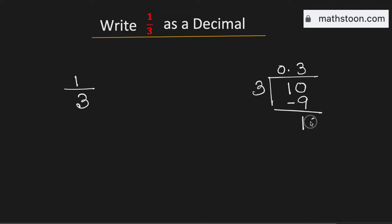Again we need to put a 0 here and again we know that 3 times 3 is 9. Now subtract we get again 1.